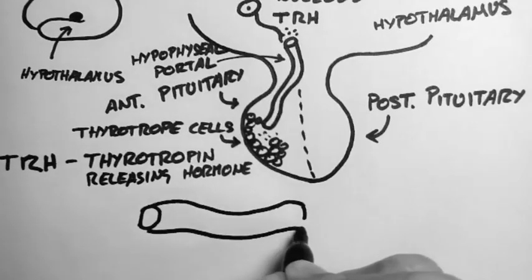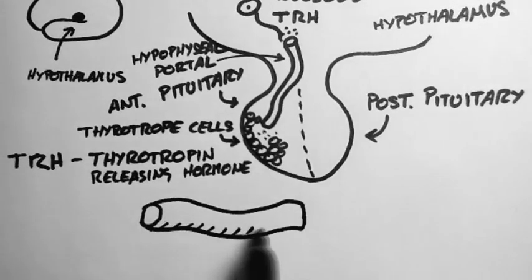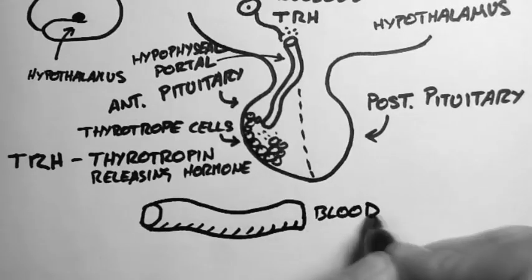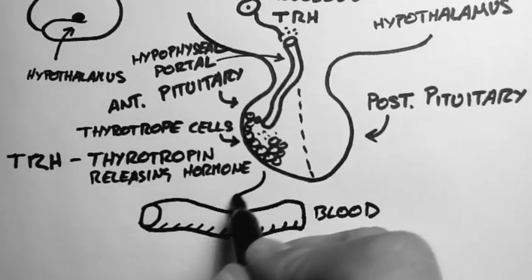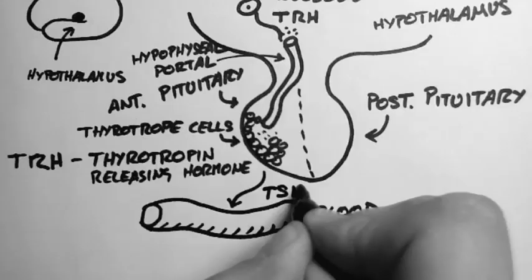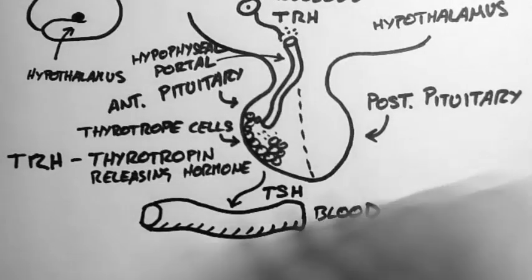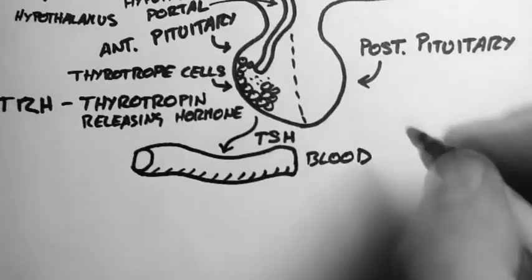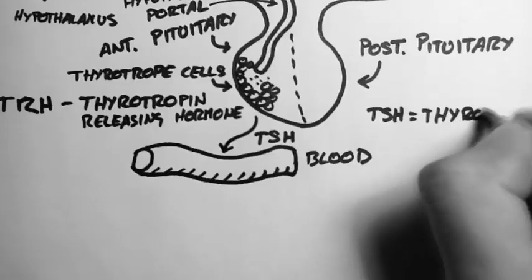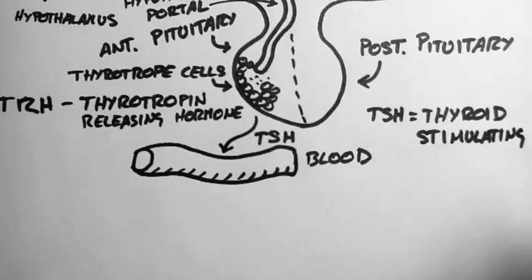And they release this hormone into the systemic circulation, so this is the bloodstream throughout the whole body. This hormone that they release is called TSH. TSH stands for Thyroid Stimulating Hormone.